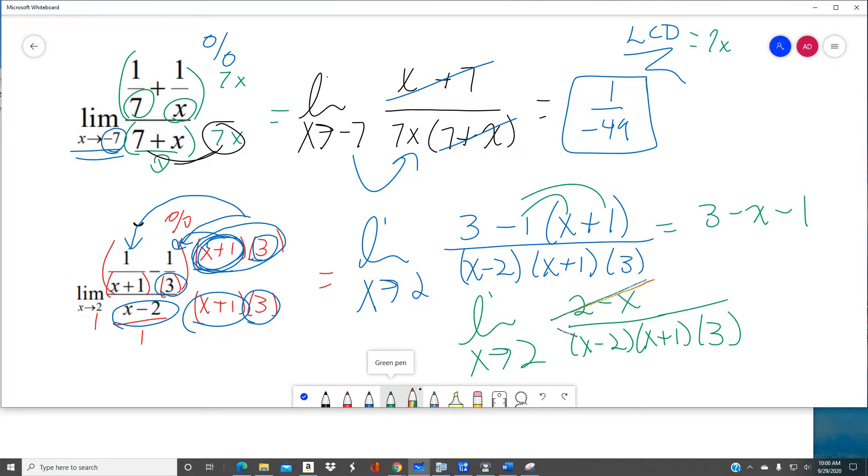Now, check it out. 2 minus X and X minus 2 are opposites of each other. Since they're opposites of each other, I can cancel it to get a negative 1. We talked about that in class, right? 2 minus X and X minus 2, they are opposites. And when you divide them out, you get negative 1. So that's what I have in the numerator.